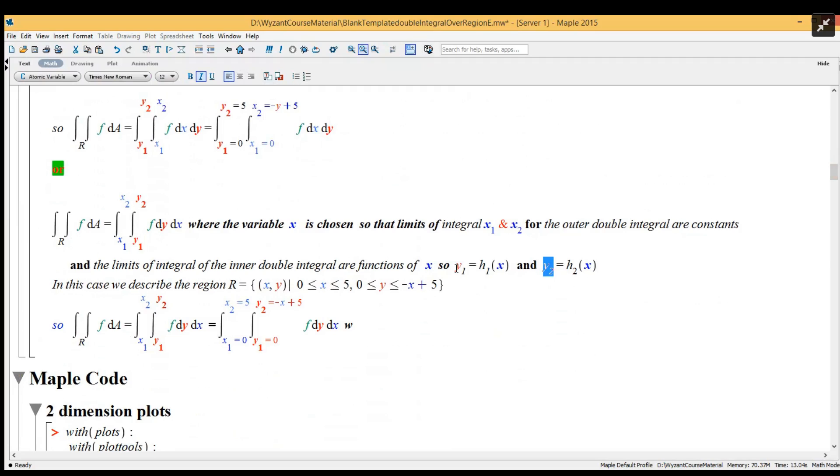So y₁ equals some function of x and y₂ is some function of x. And all I have to do is we describe the region R as a collection of (x,y), same, where now the leading variable which is the chosen one is x, which is between zero and five.